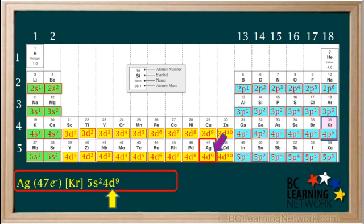And lastly, we add 4d9, which accounts for nine more electrons, giving us a total of 47, the number of electrons in a neutral silver atom. So, krypton 5s2, 4d9 is the configuration predicted by this periodic table. However, having 5s2 and 4d9 is not as stable as having the completely filled set of 4d orbitals.